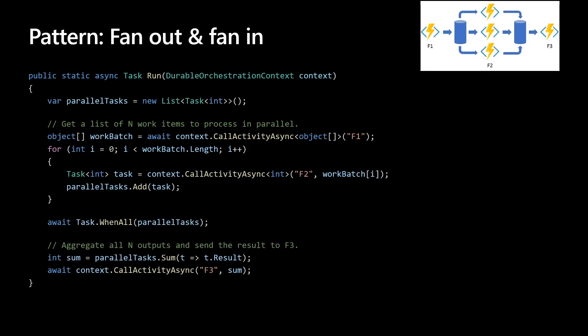In the fan-out fan-in pattern, you execute multiple functions in parallel and then wait for all functions to finish. Often some aggregation work is done on the results returned from the functions. The difference here is that CallActivityAsync for F2 is not awaited — we're not waiting for it. We're just queuing them up and adding them into a list of parallel tasks. We wait for all of them to complete with Task.WhenAll. A similar pattern is also available in Node using the yield parameter.